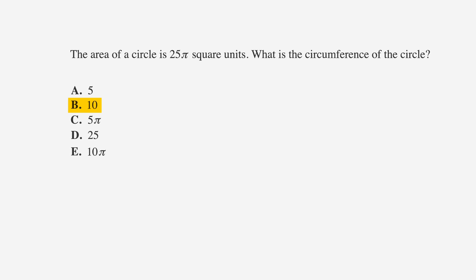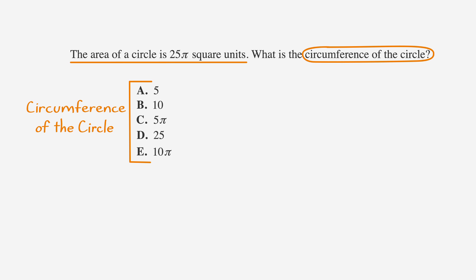A is 5, B is 10, C is 5 pi, D is 25, and E is 10 pi. Let's underline our facts, circle our keywords, and label our answer choices. Since we don't know the radius, but do know the area, we can use the area formula to figure it out.